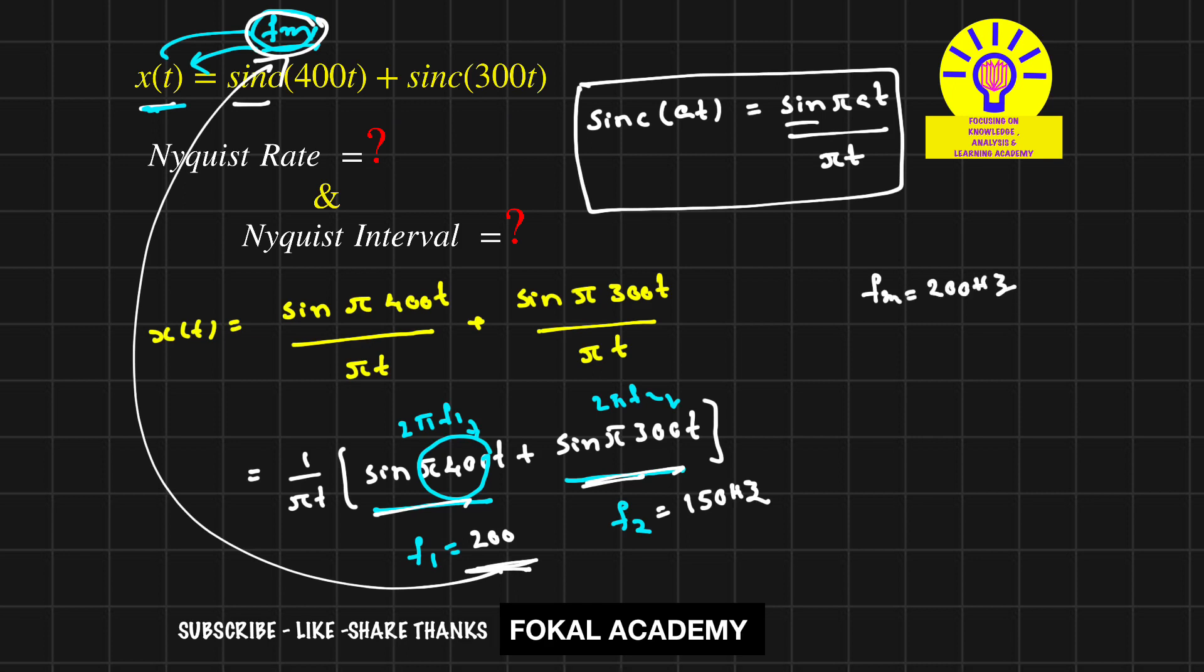Now how do you find the Nyquist rate? We know that Nyquist rate ≥ 2fm. Since fm = 200 Hz, the Nyquist rate ≥ 400 Hz. So 400 Hz is the minimum Nyquist rate.